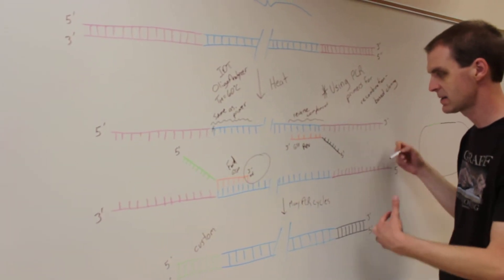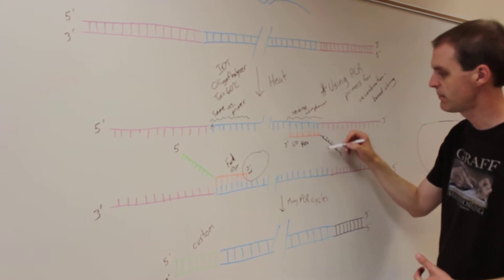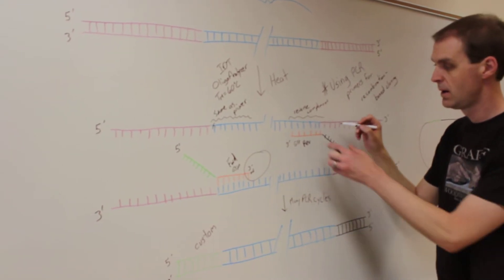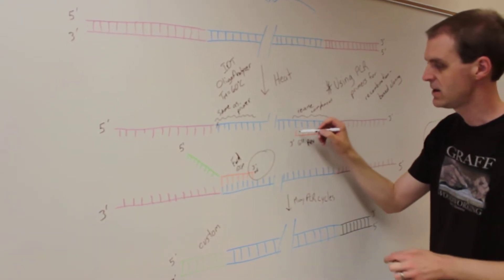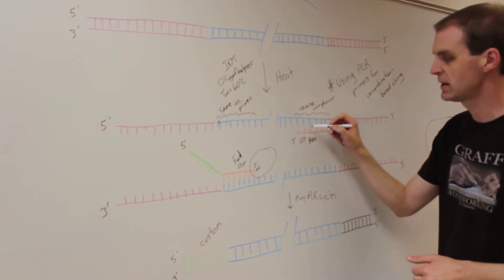So in both cases, the extra sequence you want is at the 5' end of your primer, and then you have the gene-specific portion at the 3' end.